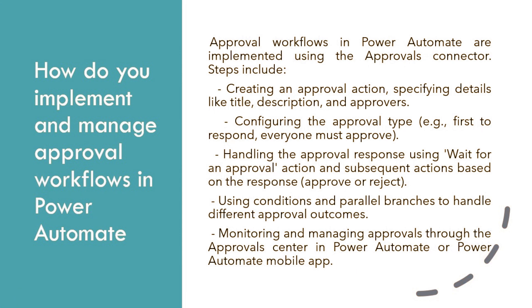How do you implement and manage approval workflows in Power Automate? Approval workflows in Power Automate are implemented using the Approvals connector. Steps include: creating an approval action specifying details like title, description, and approvers; configuring the approval type (e.g., first to respond, everyone must approve); handling the approval response using the "wait for an approval" action and subsequent actions based on the response — approve or reject; using conditions and parallel branches to handle different approval outcomes; and monitoring and managing approvals through the Approvals Center in Power Automate or the Power Automate mobile app.